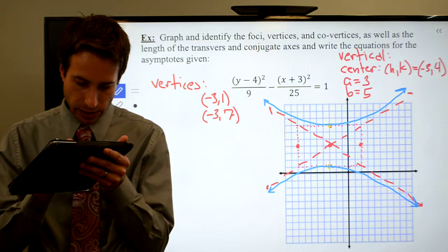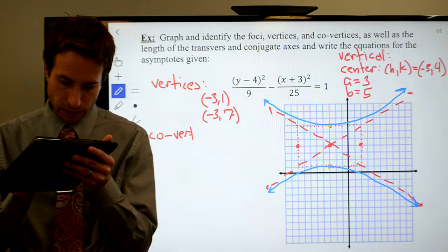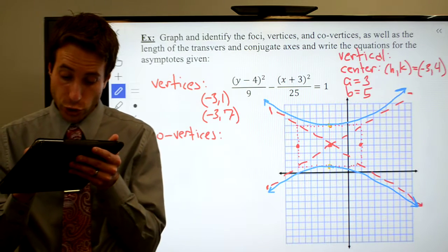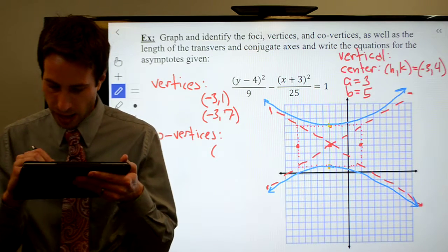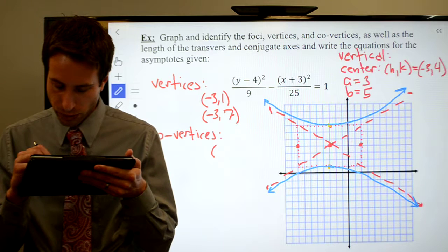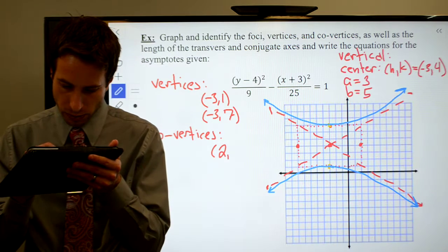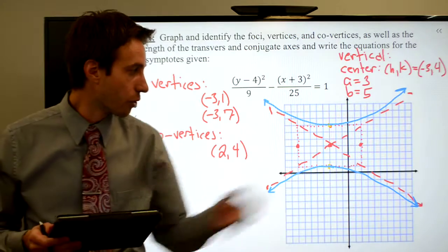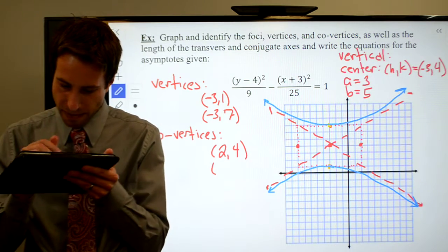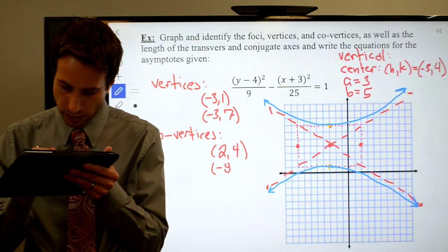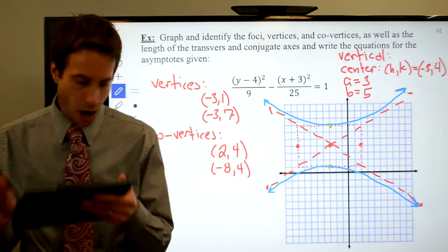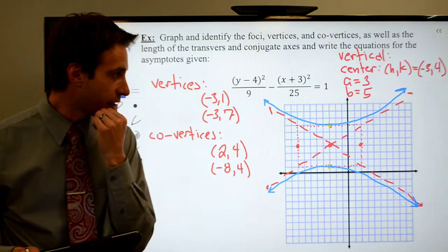Find the co-vertices. There are two of them as well. I've got one at 2, 4. That's that one over there. And I've got one at minus 8, 4. So there's my vertices and my co-vertices.